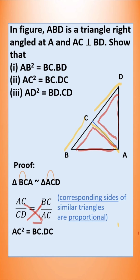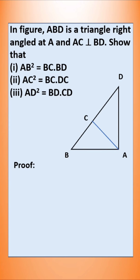This is what we needed to prove. Hence, the second problem is proved. Now let us move on to the third problem: AD squared is equal to BD into CD.